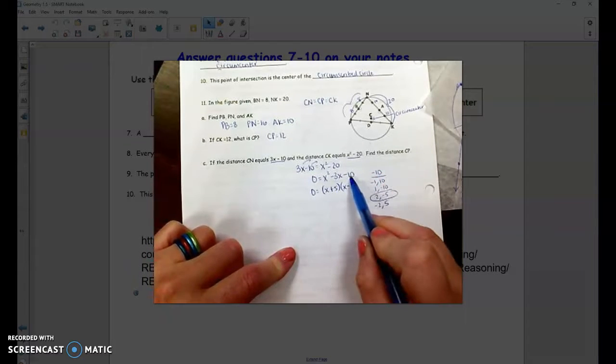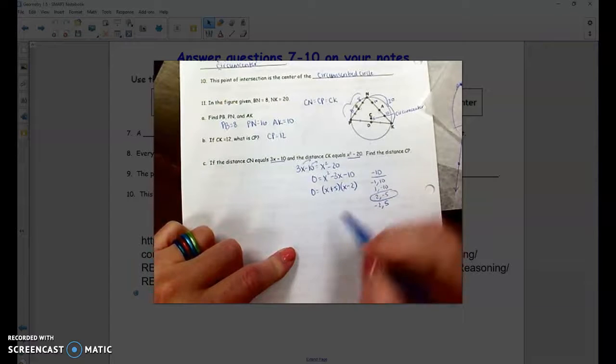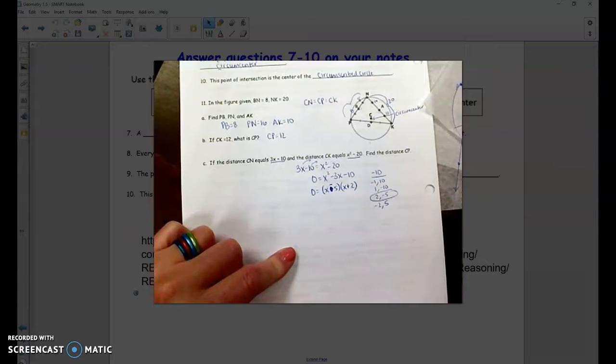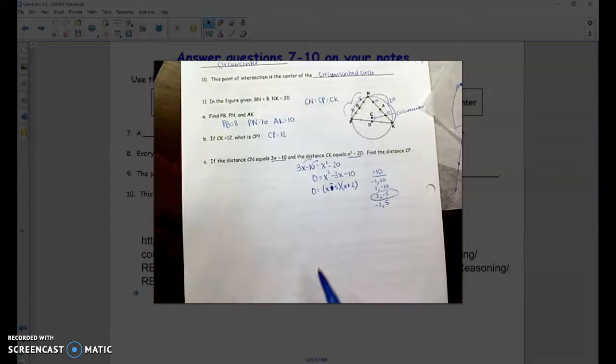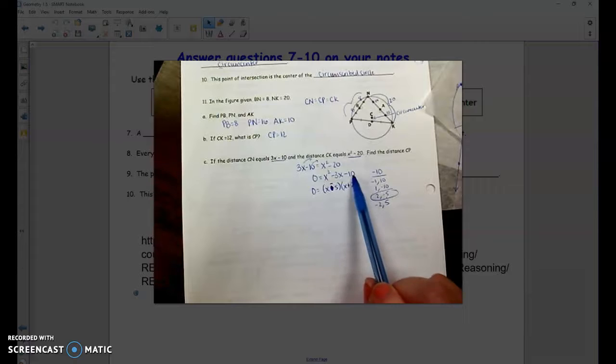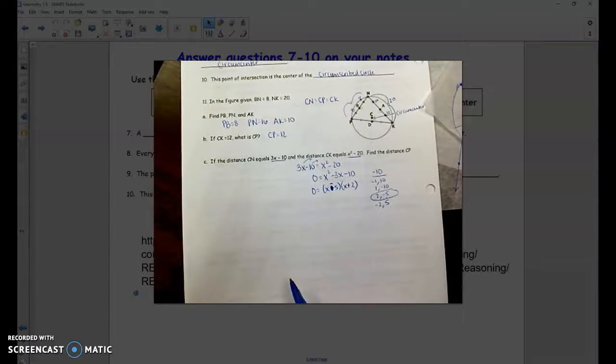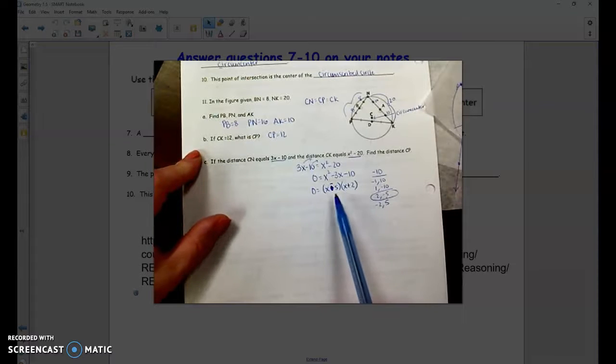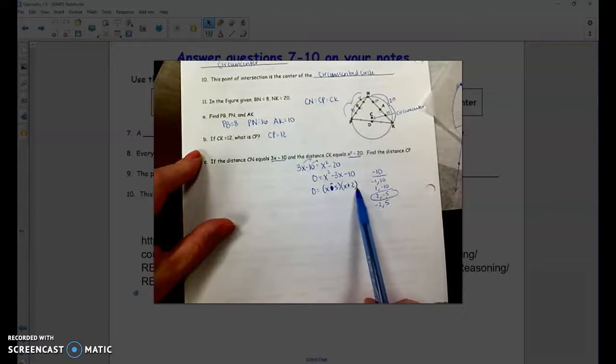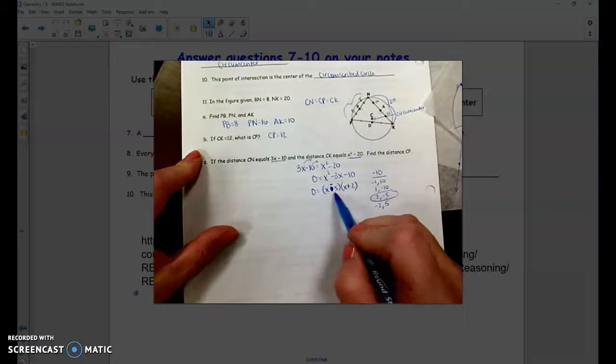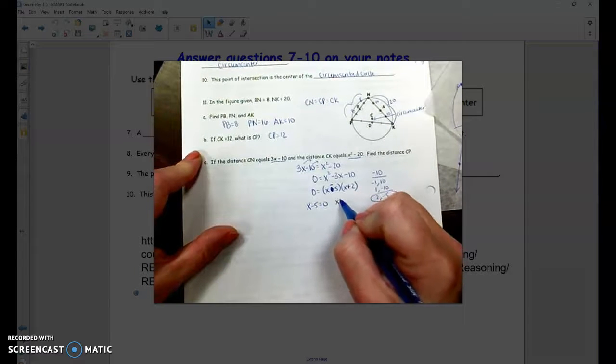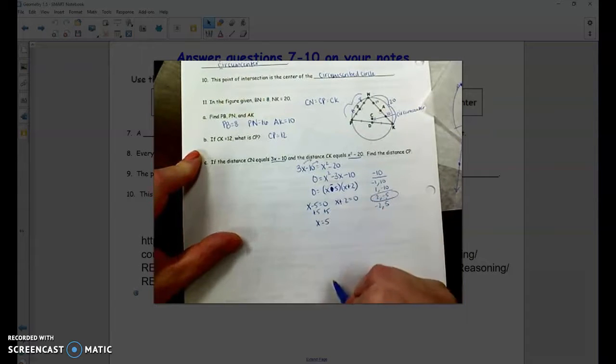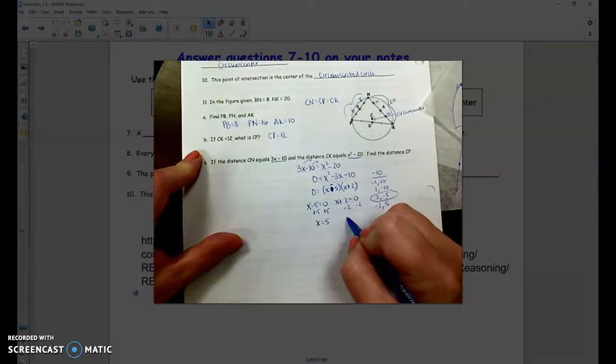So my binomial factors are X plus 5, X minus 2. 5 times negative 2 is negative 10. 5 plus negative 2 is negative... Oops, I did my signs wrong, didn't I? This should be a negative and a positive. So good thing that I double-checked. I circled the right thing and wrote it wrong up here. So negative 5 times 2 is negative 10. Negative 5 plus 2 is negative 3. So remember, that doesn't tell me X is negative 5 or X is 2. We use the zero product property to say if this times this is 0, then either the X minus 5 has to be 0 or the X plus 2 has to be 0. So solving these for X gives me the values of X to be 5 or negative 2.